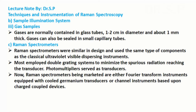Gases are normally contained in glass tubes, 1 to 2 cm in diameter and about 1 mm thick. Gases can also be sealed in small capillary tubes. The next important component of Raman instrumentation is the Raman spectrometer.